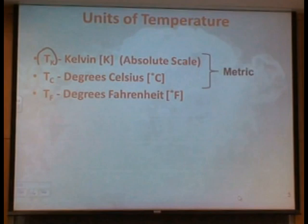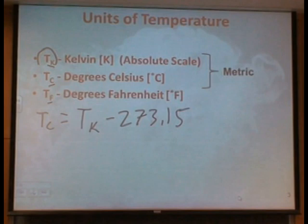So we want to be able to go from one scale to the next, and we're just going to use these subscripts K, C, and F to denote the different temperatures. If we want to go to Celsius from Kelvin, we can go T sub C equals T sub K minus 273.15. So it's a fairly simple calculation.